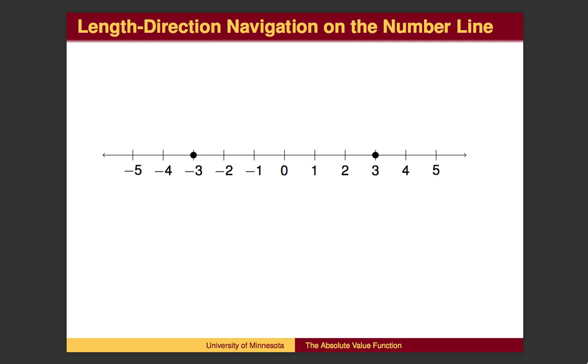There are two points that are a distance of 3 from the origin, plus 3 and minus 3. The plus or minus sign tells us whether to go left or right. The 3 tells us how far to go. The 3 is the absolute value. In other words, the absolute value is the distance from zero. The plus or minus is the direction.